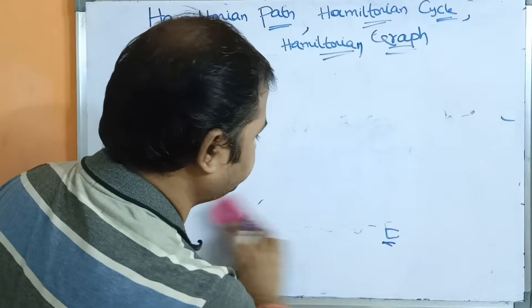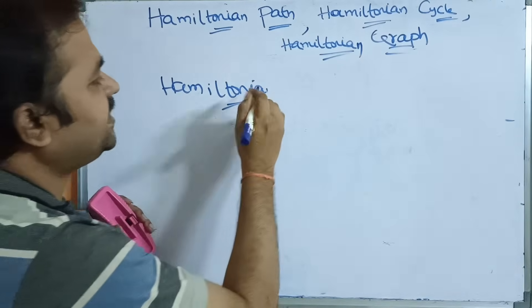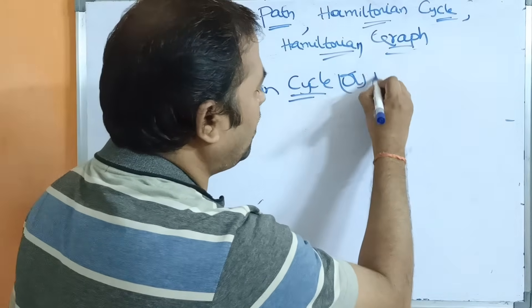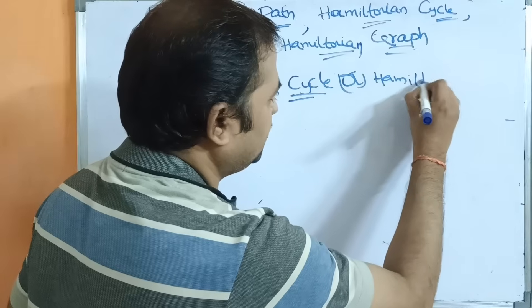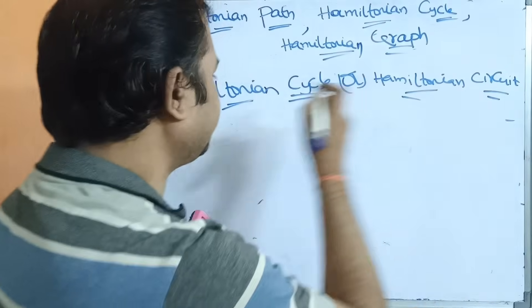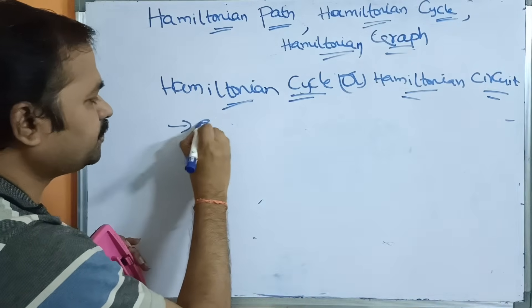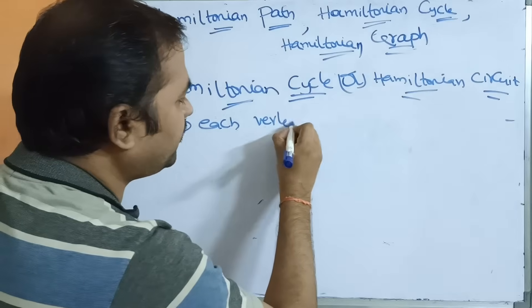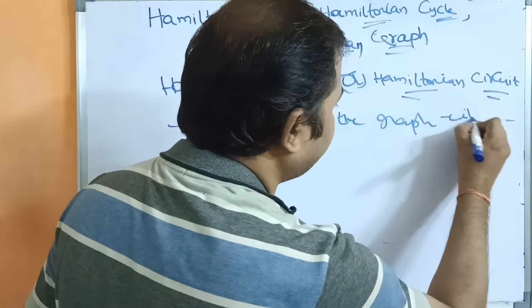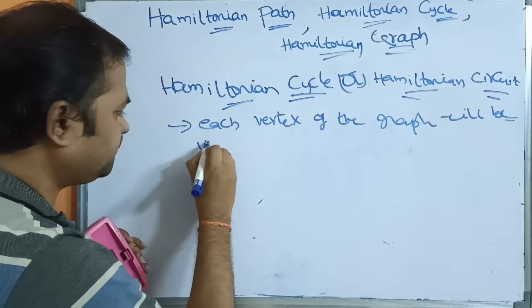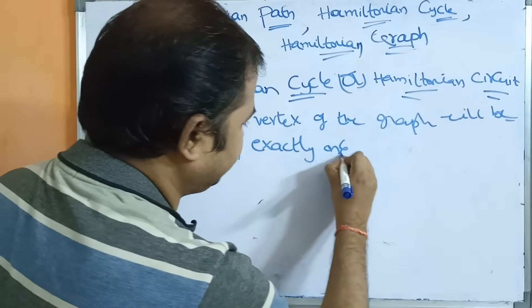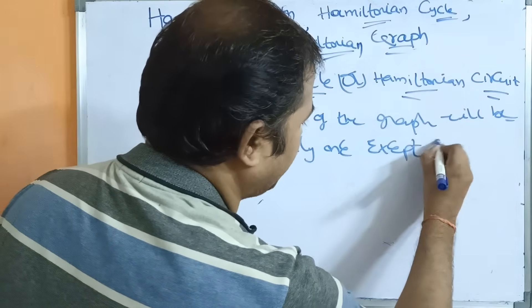Now let us see about Hamiltonian cycle, which can also be called a Hamiltonian circuit — both are the same. In a Hamiltonian circuit, each vertex of the graph will be visited exactly once, except the start vertex.